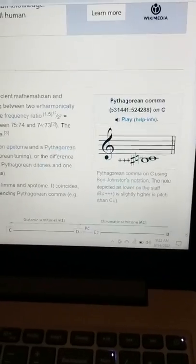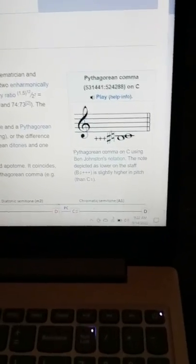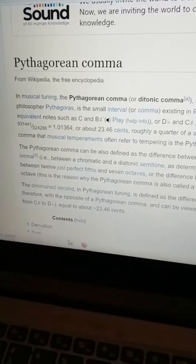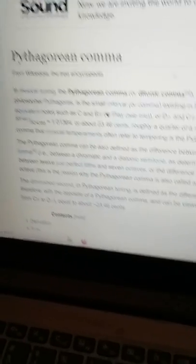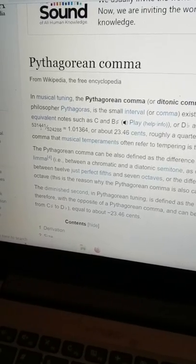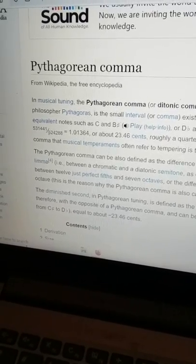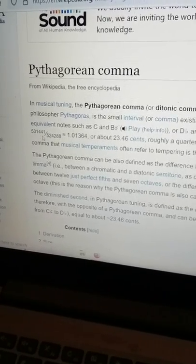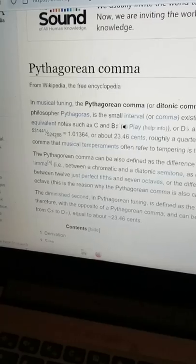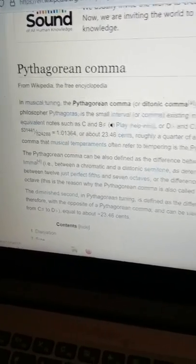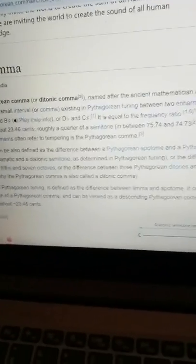So this is like the Wikipedia page, which is supposed to be like the definitive page here. So they give you this ratio. Now this ratio is of 531,441 over 524,288. That ratio is directly from Philolaus of pre-Socratic or ancient Greece, around Socrates time.